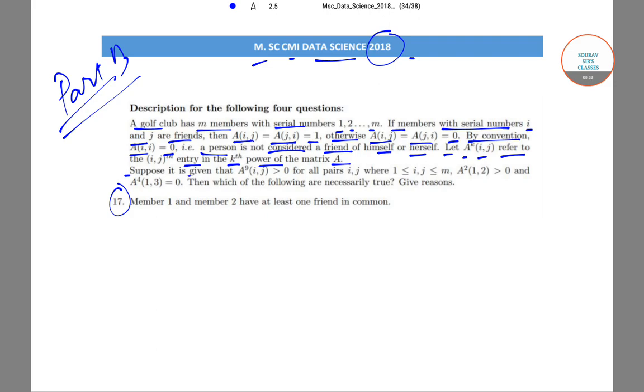Now suppose it is given that A to the power 9 of (I,J) is greater than 0 for all pairs (I,J) where I is less than or equal to J which is less than or equal to M. And it has also been given that A squared (1,2) is greater than 0 and A to the power 4 (1,3) equals 0.